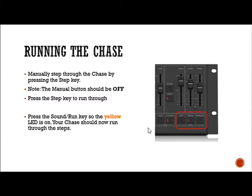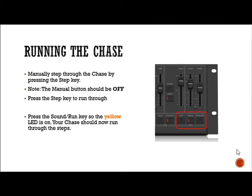Now if we wanted to have it automatically run, we'll turn on the sound/run button. It can be red for sound or yellow for run. When you press it and the yellow light turns on, it will run through our chase automatically. We can control the speed using one button and the crossfade using another — the crossfade controls the transition between steps, and the speed controls how fast each step goes.